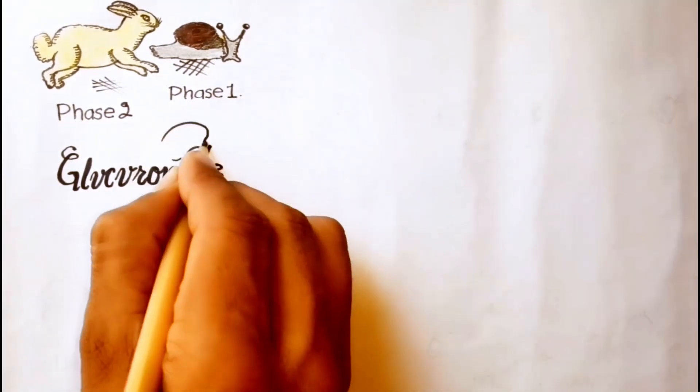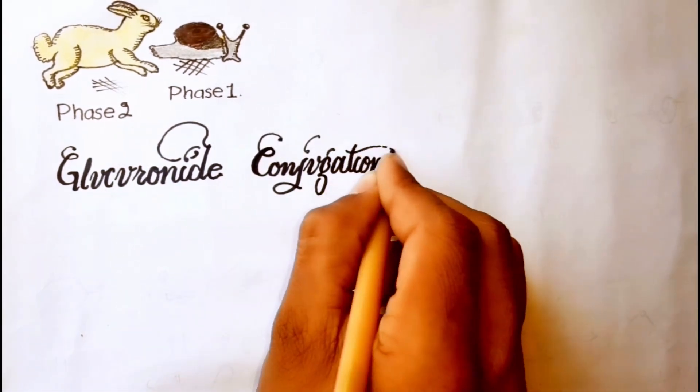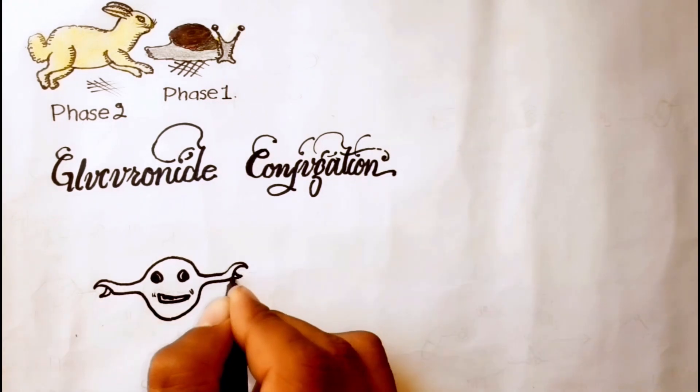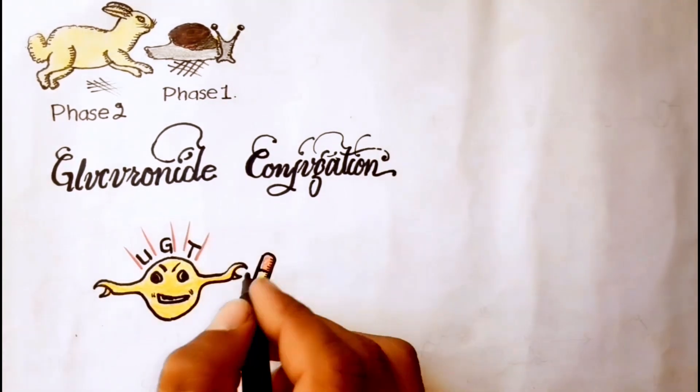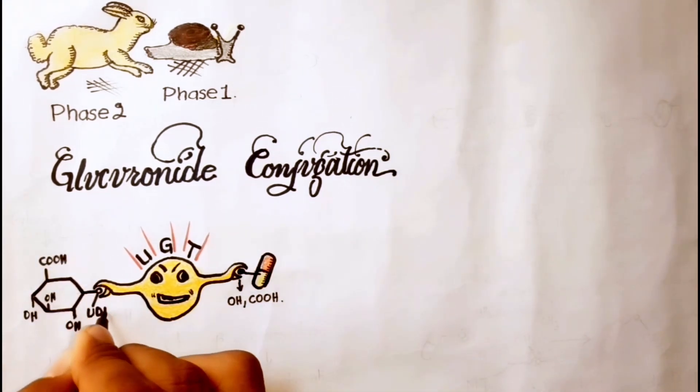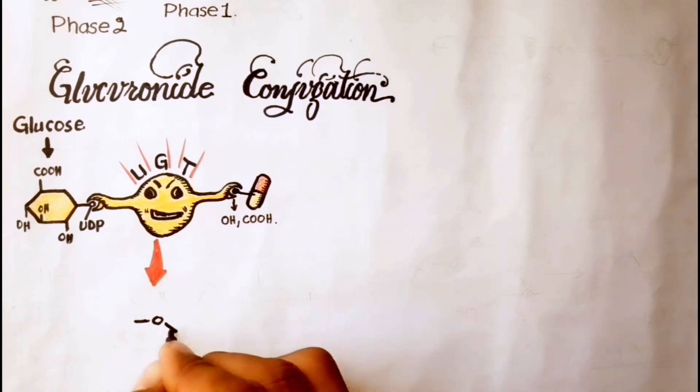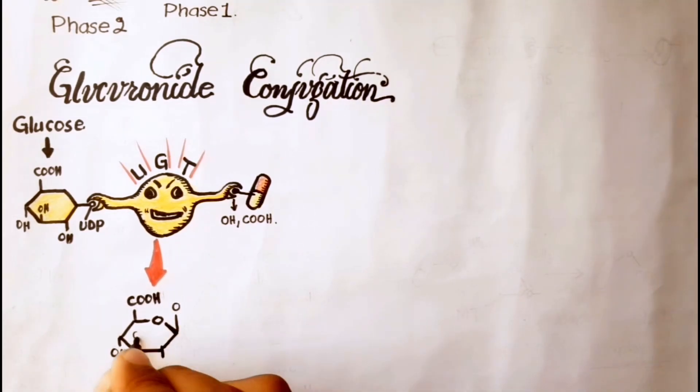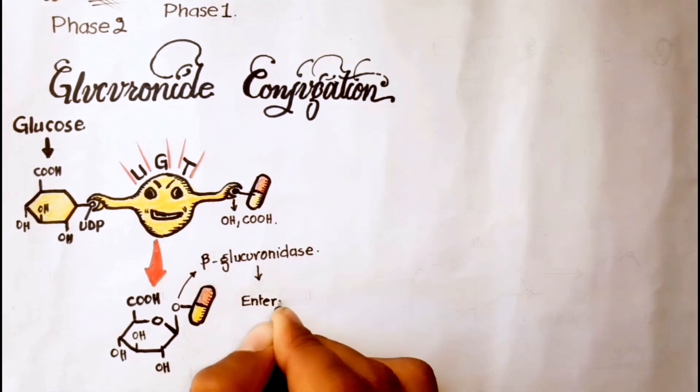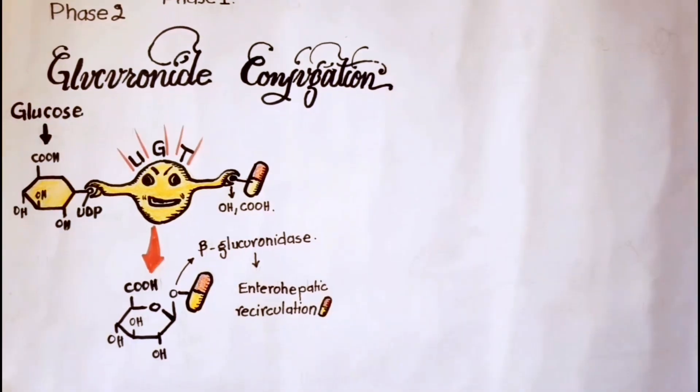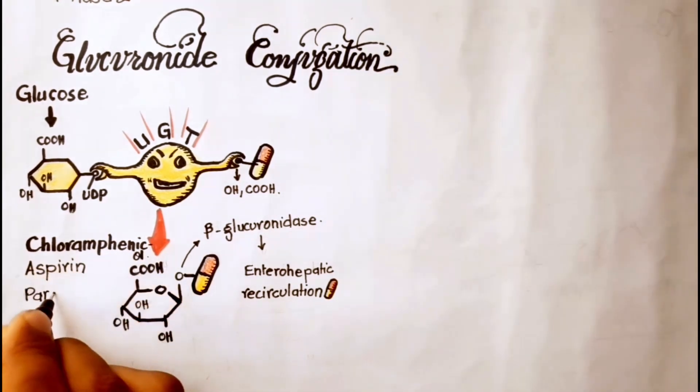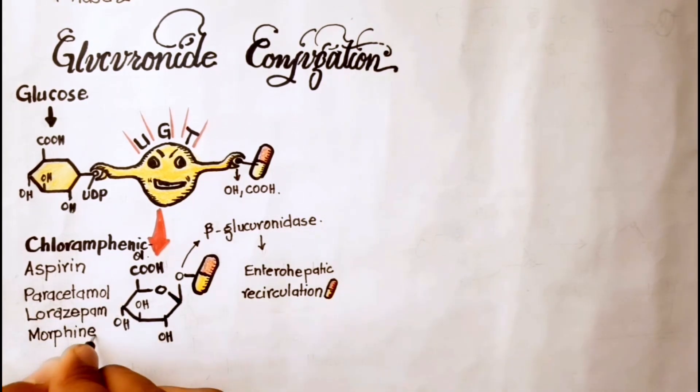Phase 2 reactions include first glucuronide conjugation. This is the most important synthetic reaction carried out by UDP-glucuronosyltransferases, UGTs for short. Drugs with a hydroxyl or carboxylic acid group are easily conjugated with glucuronic acid derived from glucose. The bonds formed are sensitive to beta-glucuronidase enzymes of bacteria in GI tract, responsible for enterohepatic recirculation. Examples include chloramphenicol, aspirin, paracetamol, lorazepam, morphine, and metronidazole.